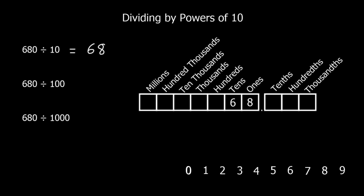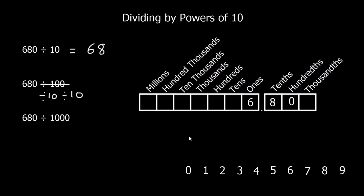Going back to 680, this time we divide by 100, which is the same as dividing by 10 twice. Every time we divide by 10 we move everything back down to the smaller column, so we move all the digits down twice. That gives us 6.80, and since 6.80 is the same as 6.8, we write just 6.8.